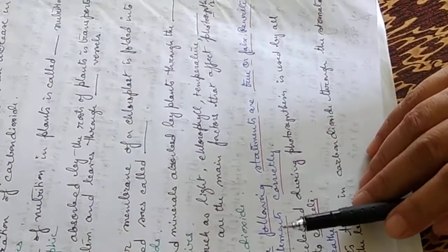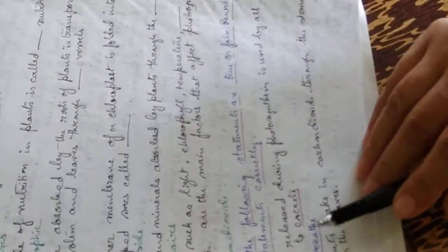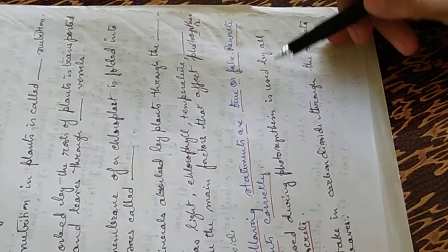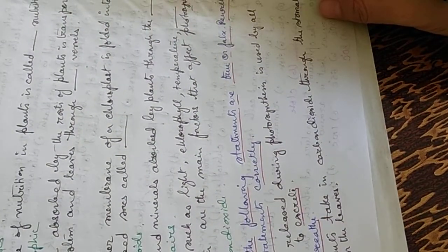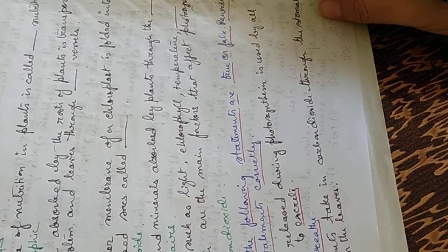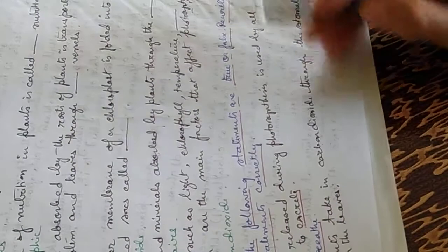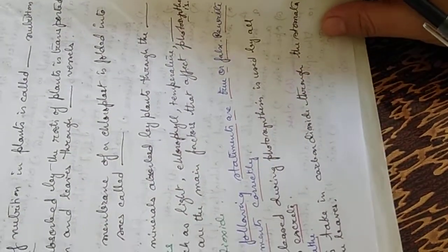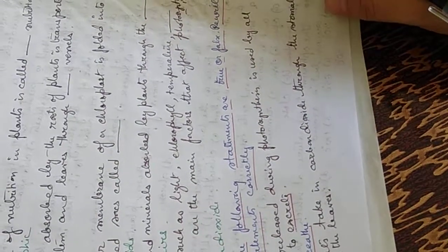Now we come to the true and false section where we have to correct the false statements. Oxygen released during photosynthesis is used by all the organisms to excrete. The answer is false. That is, oxygen released during photosynthesis is used by all organisms to breathe, not to excrete.